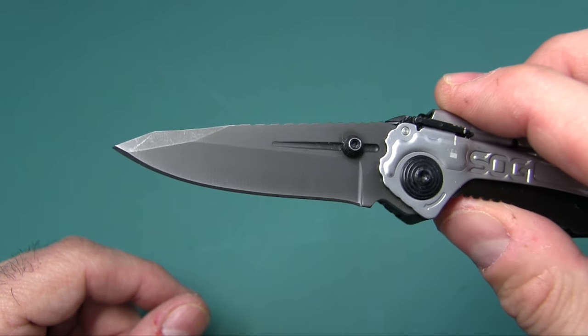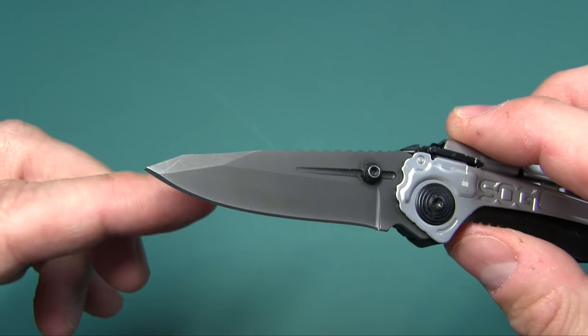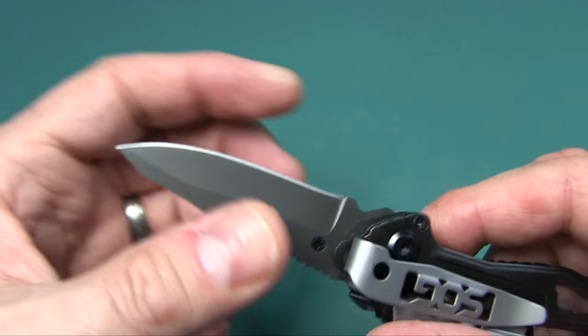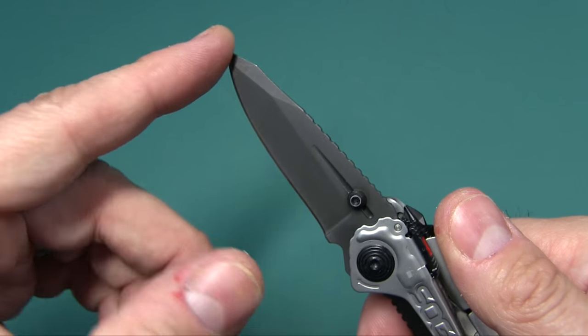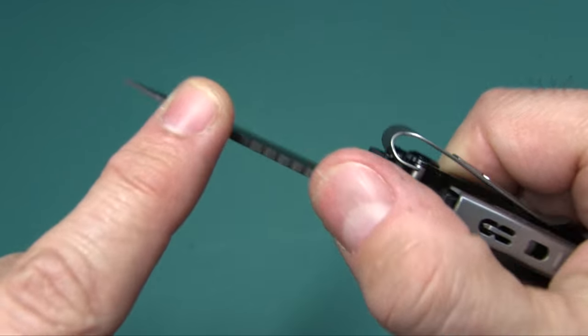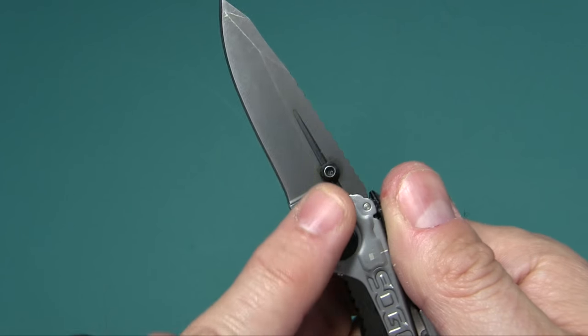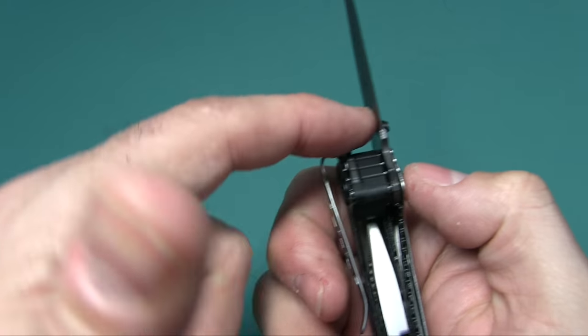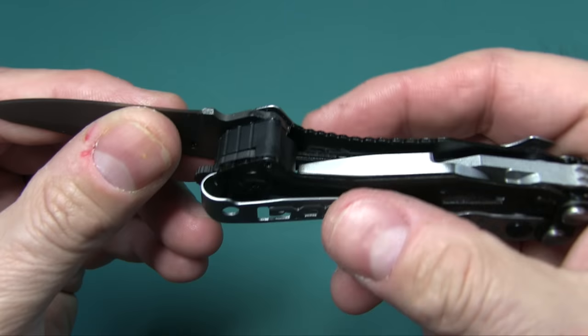Looks like a modified drop point, clip point, I don't know, whatever. You can see it has a black hard case finish. It is a fine edge. You have some decorative jimping thumb stud only on one side because you can't put it on the other side because it is attached to the multi-tool.